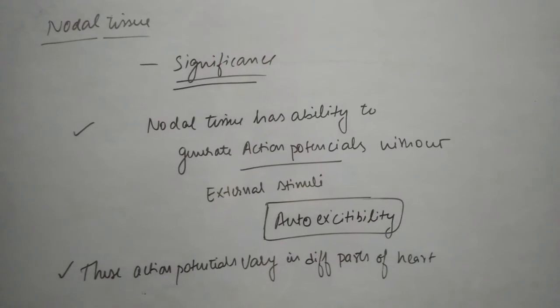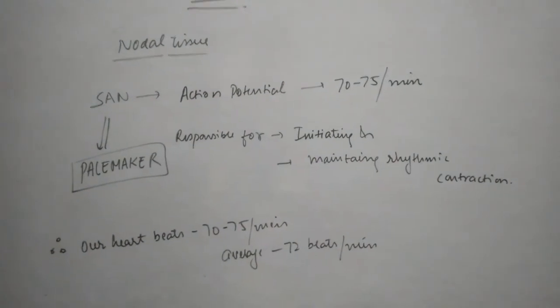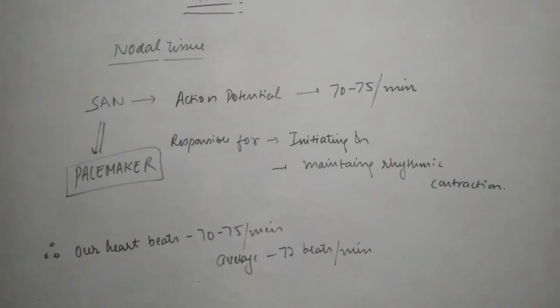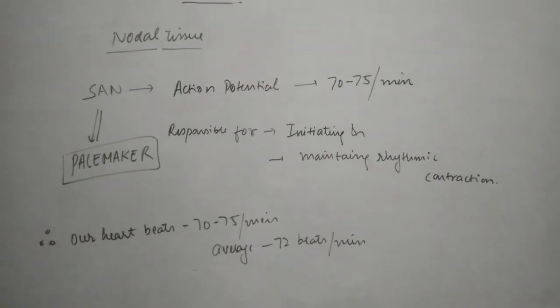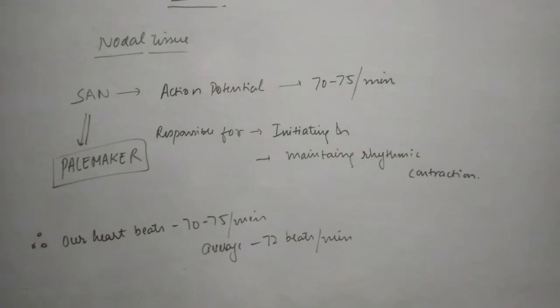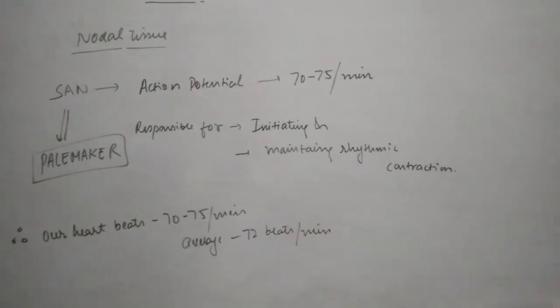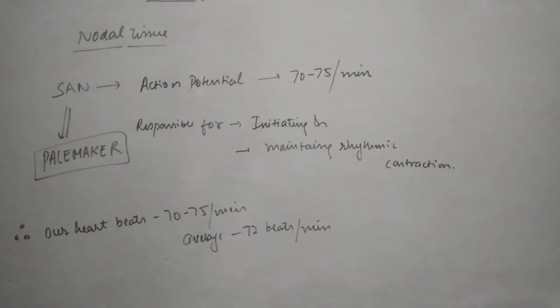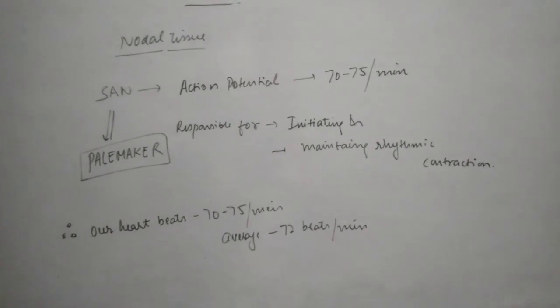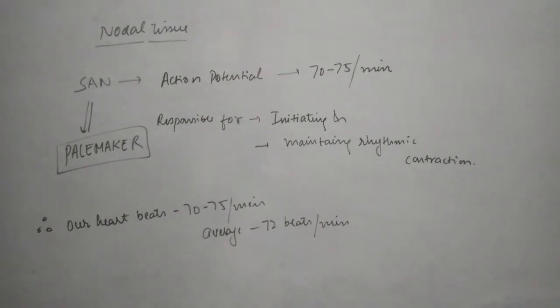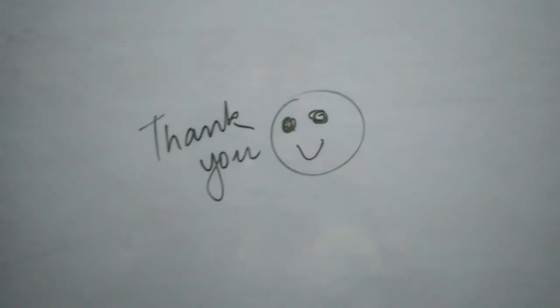The sinoatrial node (SAN) can generate 70 to 75 action potentials per minute. That's why we call SAN the pacemaker, because SAN is responsible for initiating these action potentials and maintaining the rhythmic contractions of the heart. That's why our heart beats 70 to 75 times per minute, an average of 72 beats per minute. This video is an introductory part about the structure of the heart.